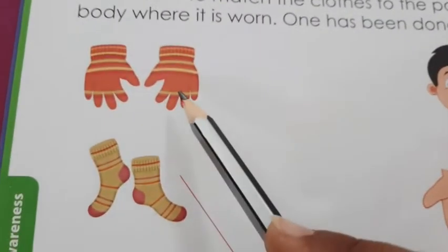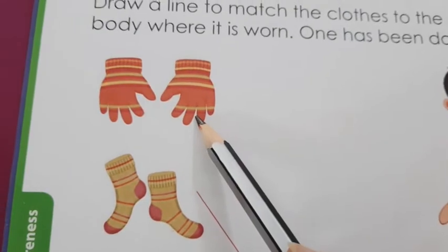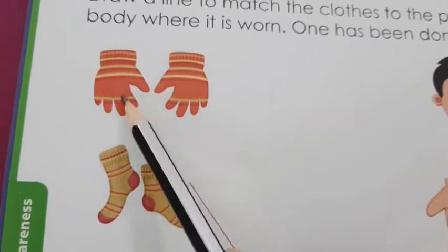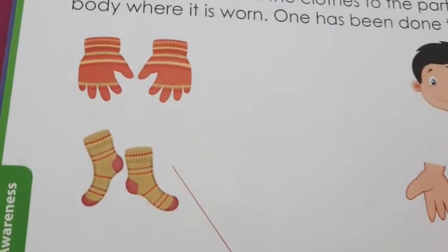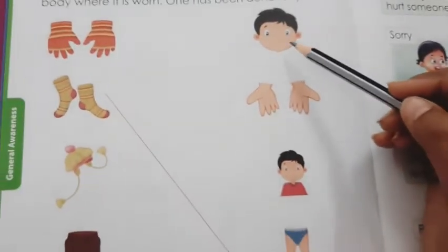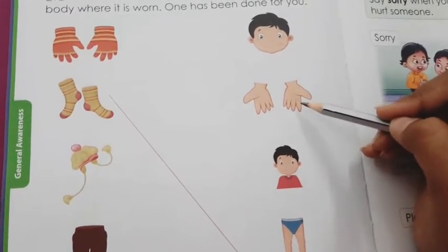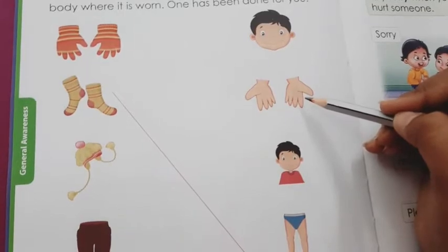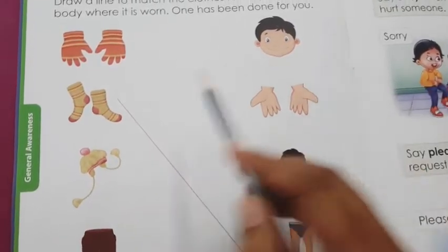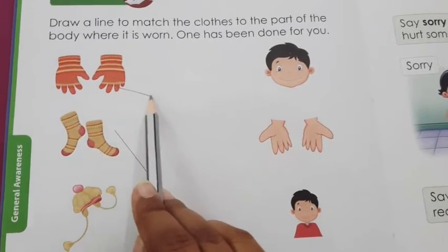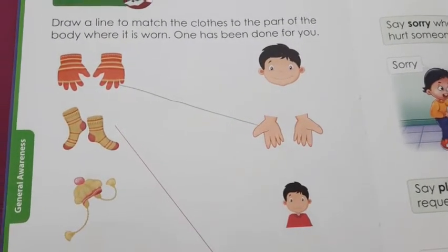Now, firstly, identify which cloth is this? These are gloves. Where do we wear gloves? We wear gloves in our hands — not in our mouth or face. We wear gloves to cover our hands. So we will draw the matching line from here to here in a straight line.